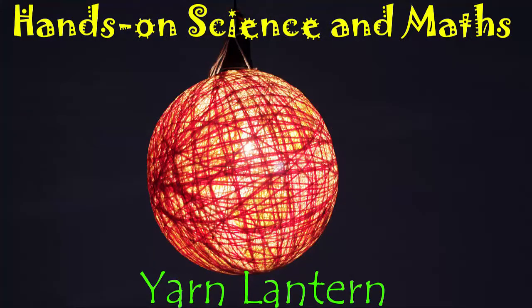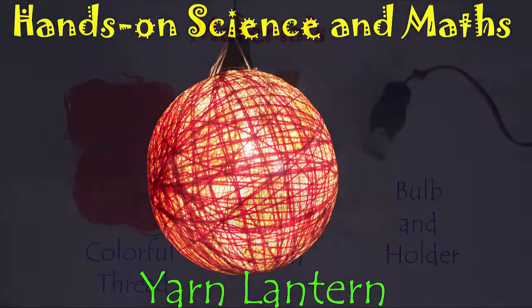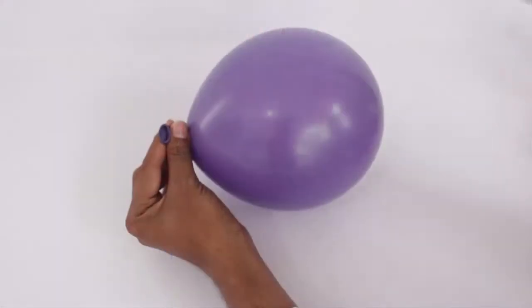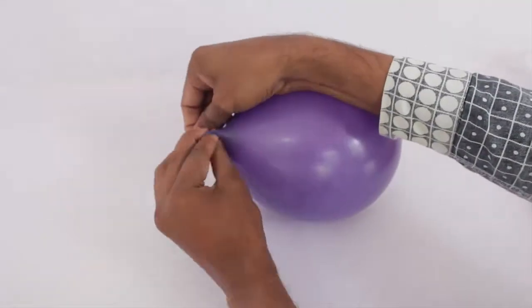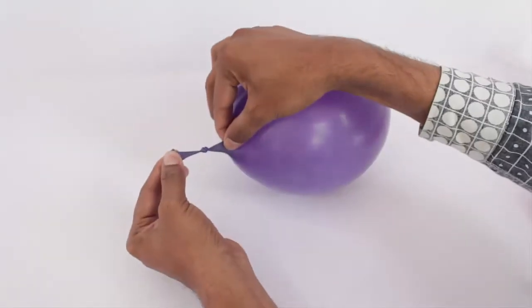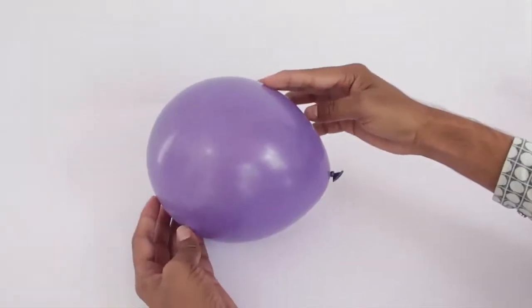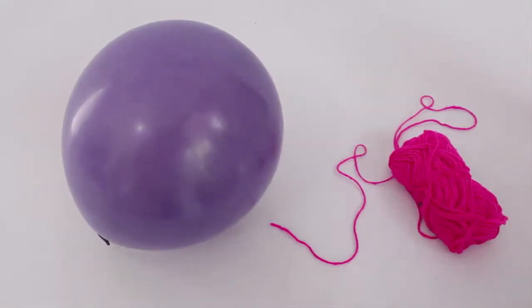To make this exquisite lantern you need colorful thread or wool, a balloon, glue, a bulb holder and a bulb. First inflate the balloon and tie a knot, then take colored wool or thread and keep tying it on the balloon.